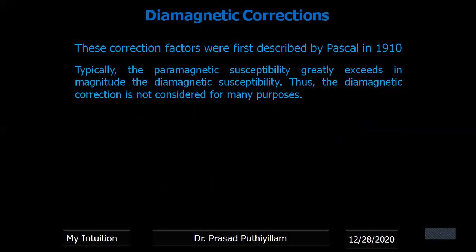These diamagnetic correction values were introduced or described first time by Pascal in 1910. Therefore, even we can call those diamagnetic correction values that we took for the calculation as Pascal's constant also.